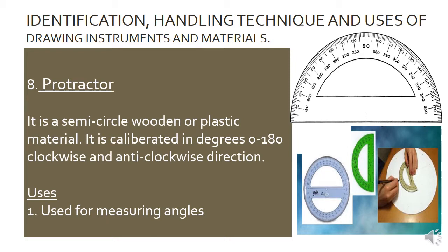Protractor is a semi-circle wooden or plastic material calibrated in degrees — 0 to 180 degrees clockwise and 0 to 180 degrees anti-clockwise. Uses of protractor: It is used for measuring angles.